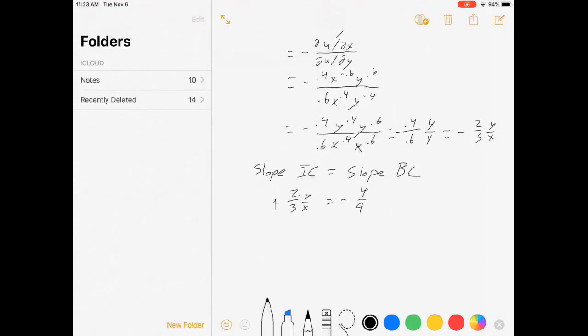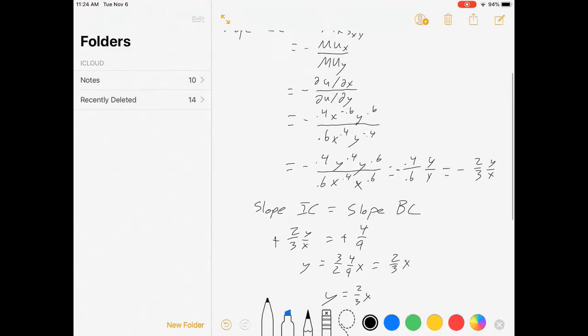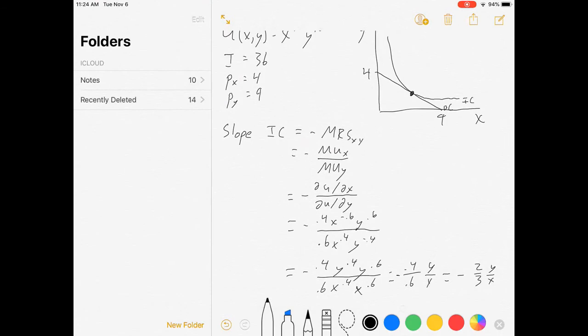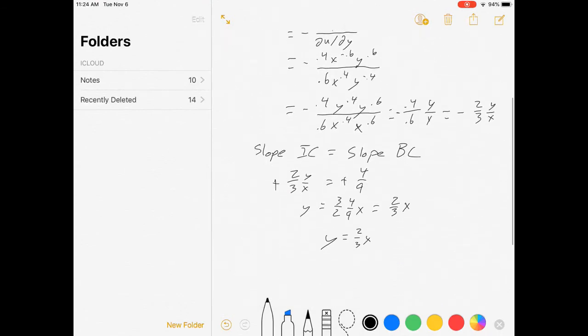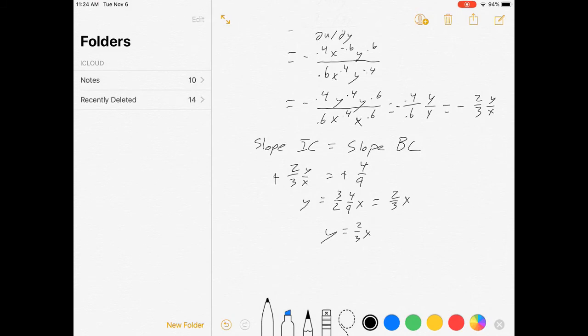Let's see. I'm going to cancel out those negatives. And then y is equal to, let's see, 3 halves times 4 ninths of x, which is 2 thirds of x. And so we get this ratio here. Y equals 2 thirds x. Which means in order for these two lines to share the same slope, there must be 2 thirds as much y as there is x. And that's it.